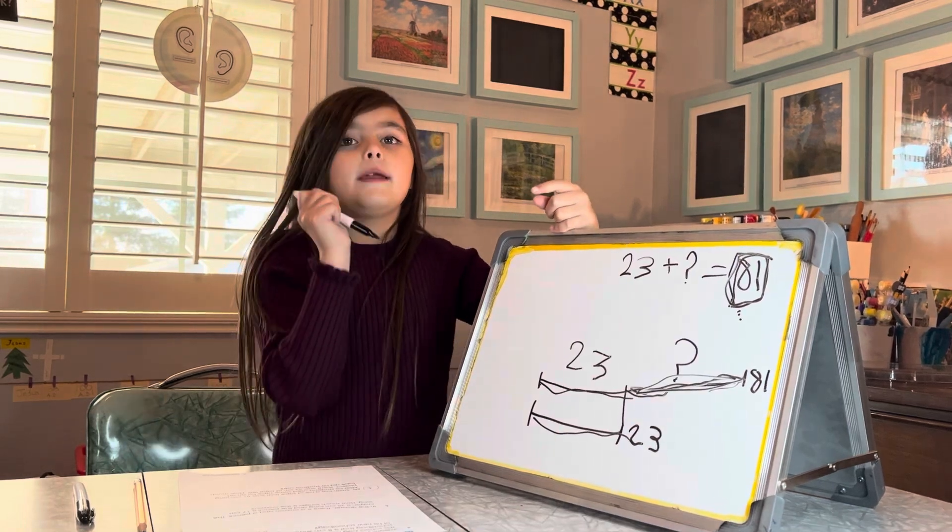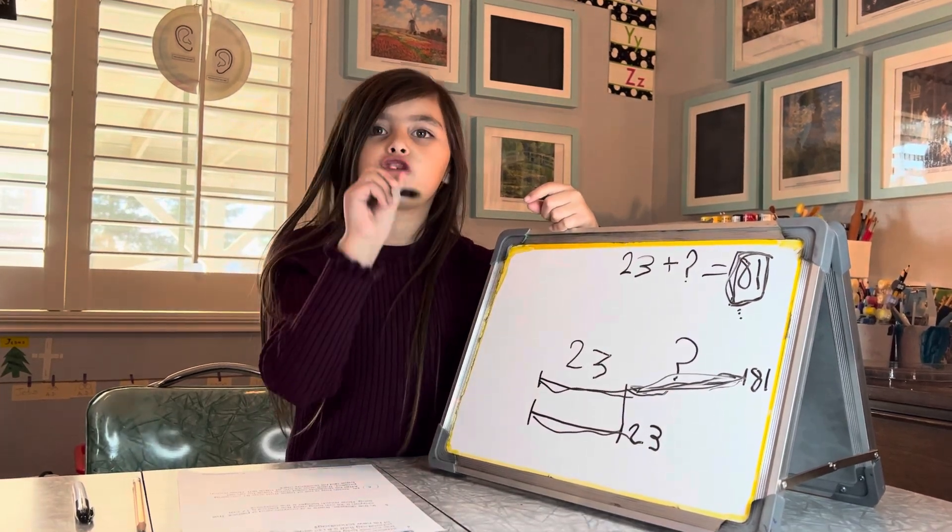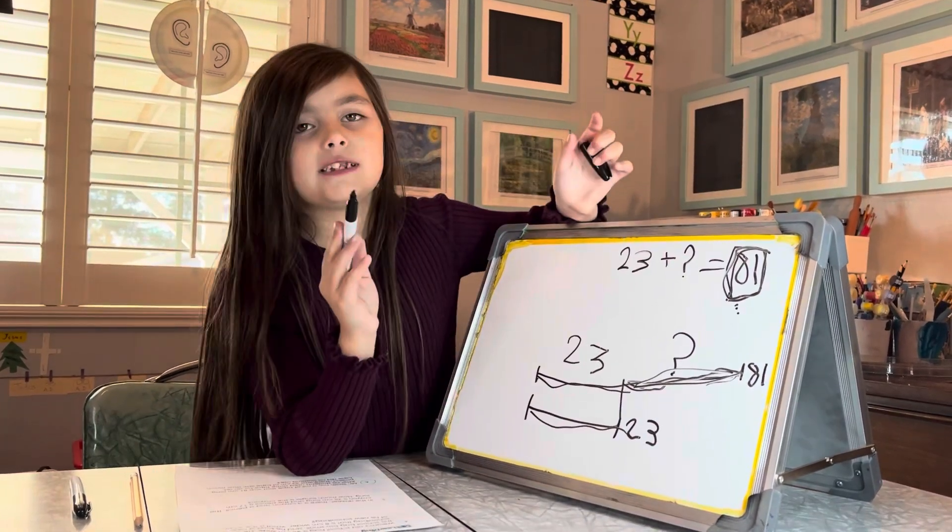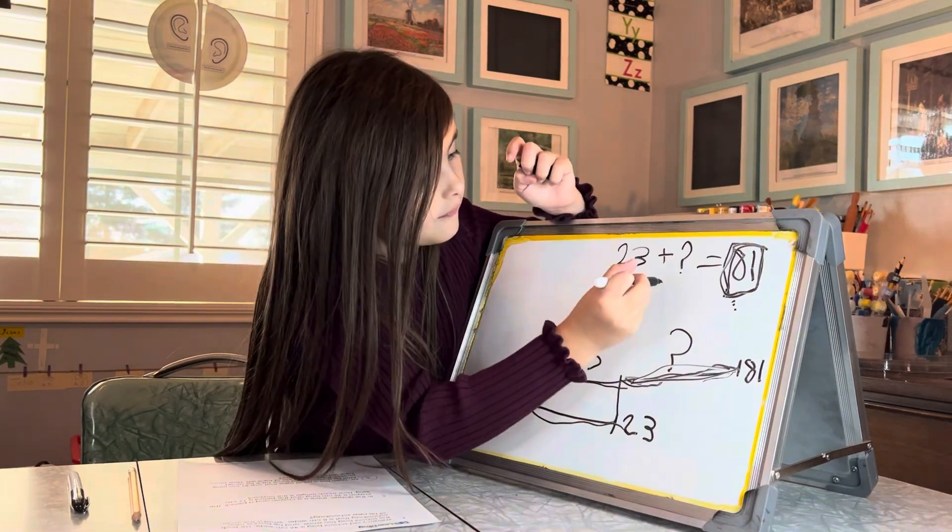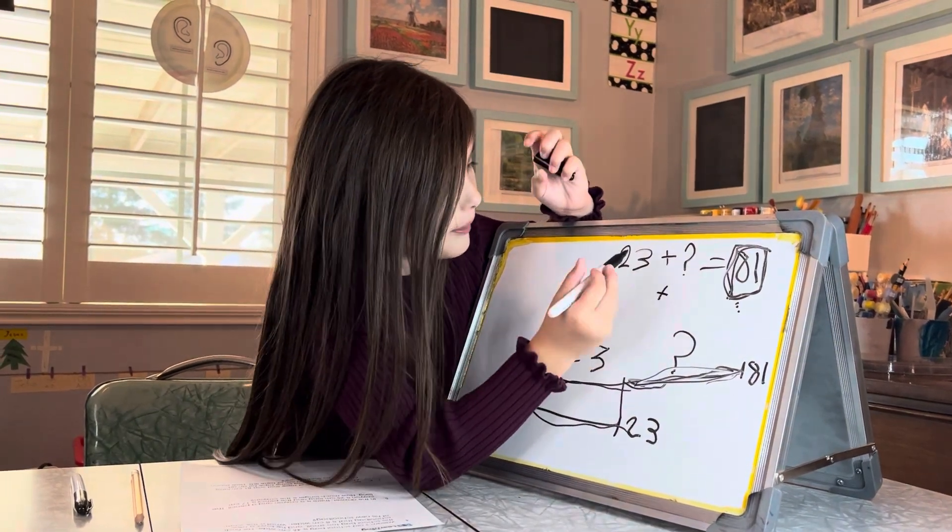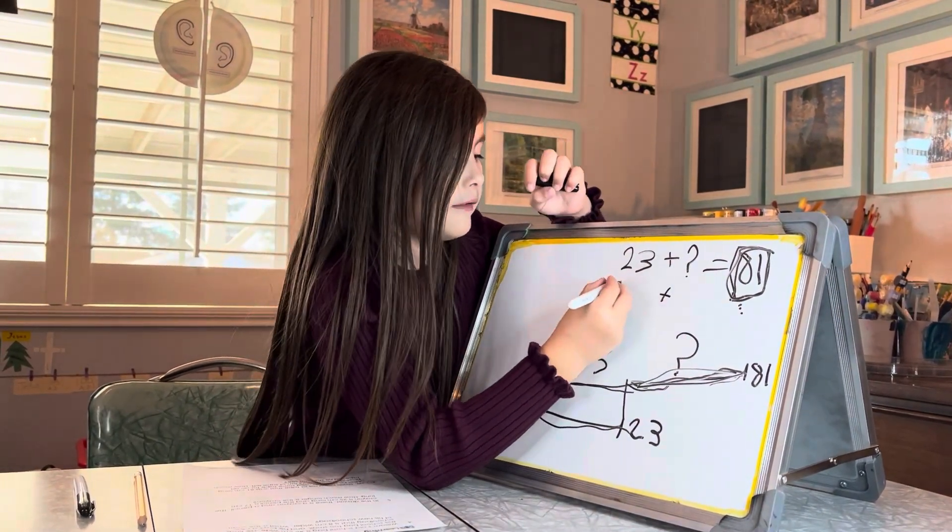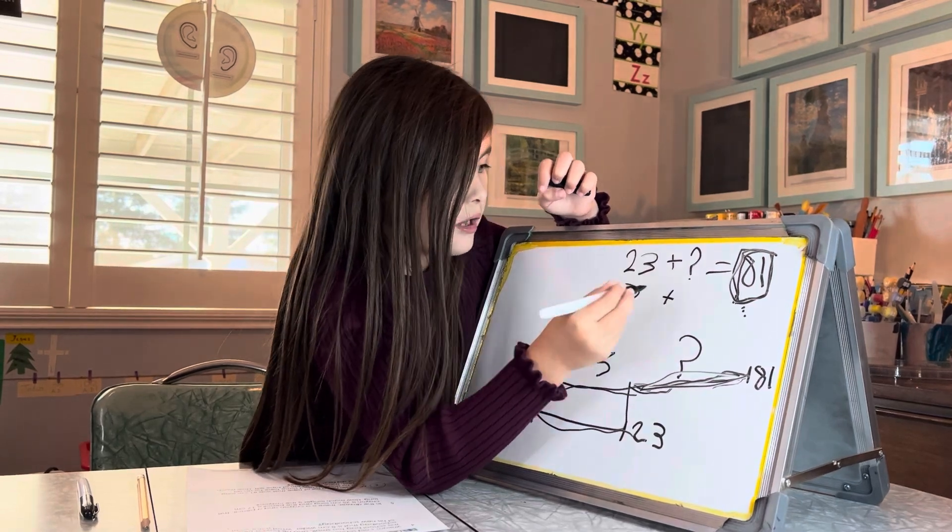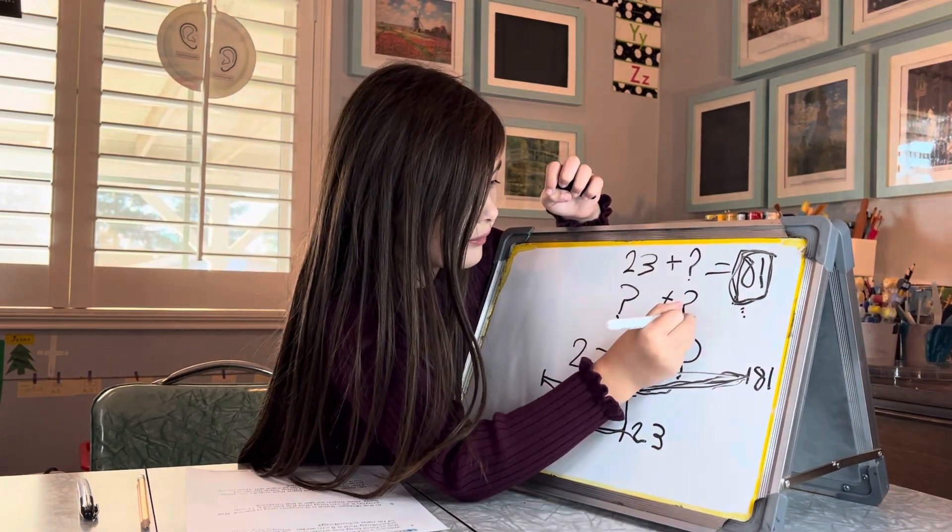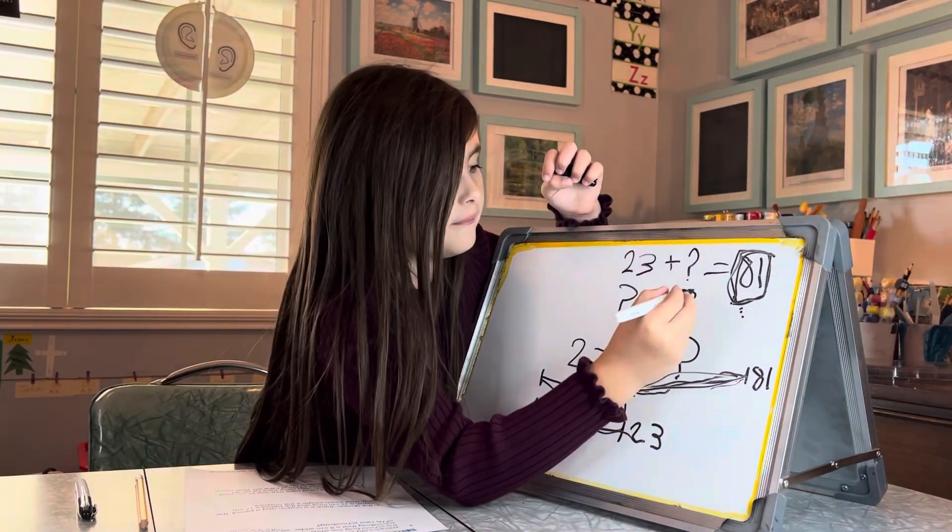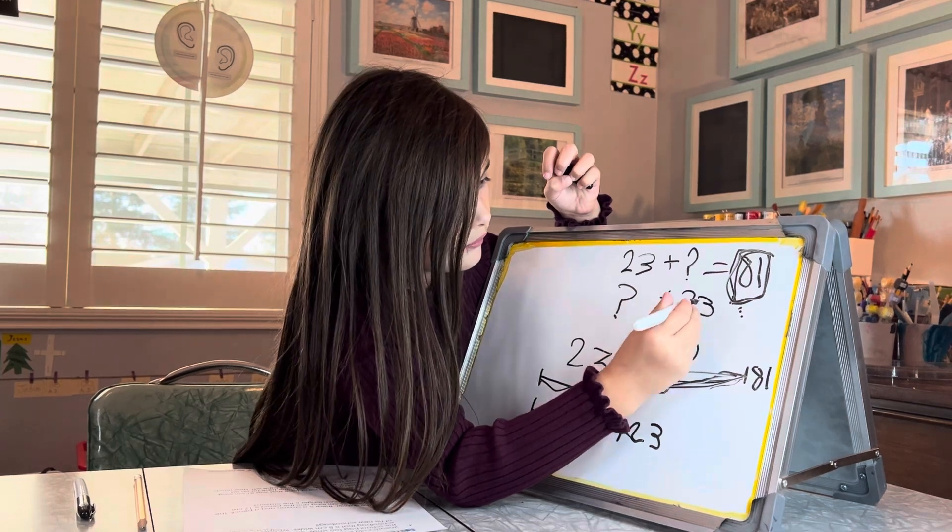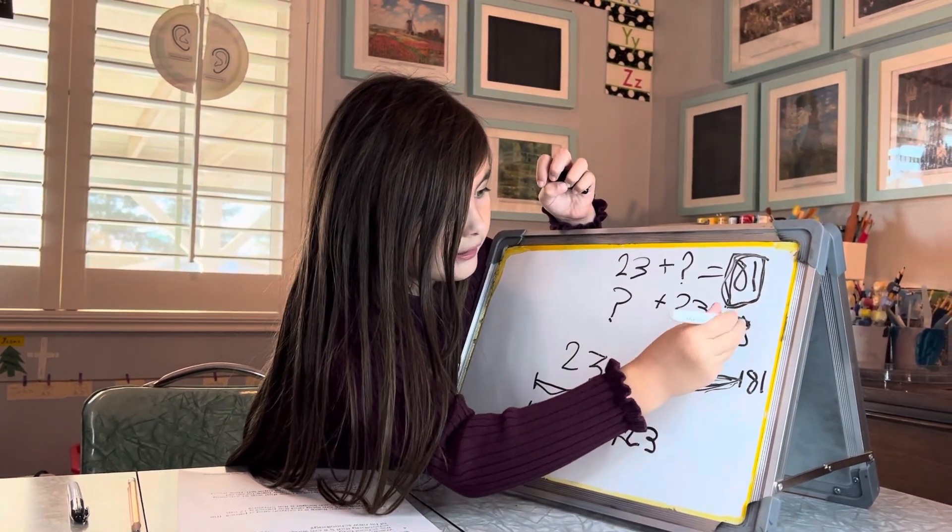But at takeaway, we put it at the very, very start. I just wanted to tell you that. The next problem, plus problem is question mark plus 23, my twos are not very good, equals 81.